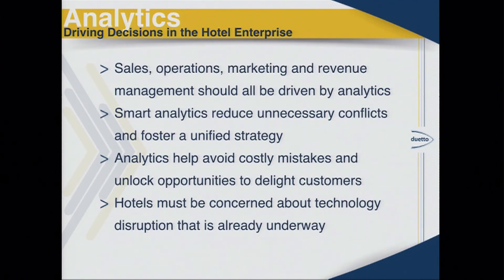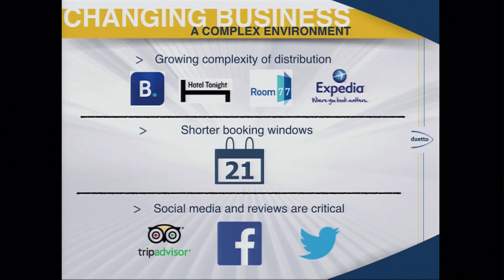Hotels must be concerned about technology disruption that is already underway. The primary source of disruption in the hotel industry today is what's happening on the distribution side — companies like Booking.com, Hotel Tonight, Room 77, Expedia, and eventually Google, Apple, and others are increasingly getting between hotel companies and their customers. It's increasingly shown that a direct booking is no longer really a direct booking anymore. You're going to be paying a toll to someone else to get business to your own website, and this is also driving shorter booking windows, which will continue as mobile grows.